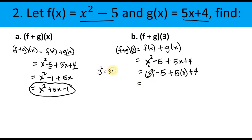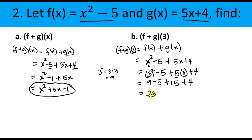3² = 9, so we have 9 − 5 + 5(3) + 4. Simplifying: 5 × 3 = 15. So we have 9 − 5 + 15 + 4. Adding everything: 9 − 5 = 4, then 4 + 4 = 8, then 8 + 15 = 23. The final answer is 23.